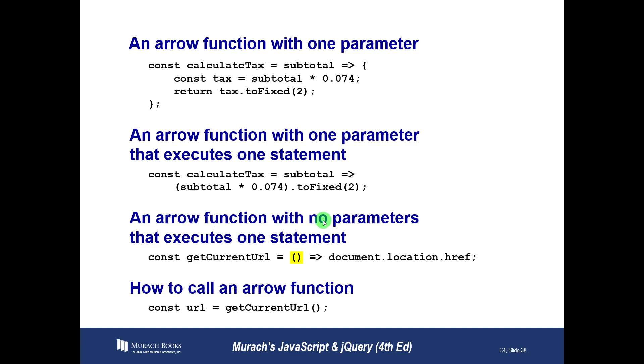Here's an arrow function with no parameters that executes one statement. This one's called getURL, and it's going to call the document object and find out the location, href, which is the hyper reference for what page this is, basically. This doesn't take any parameters, so they use an empty set of parentheses here.